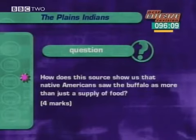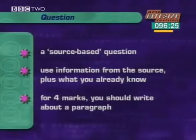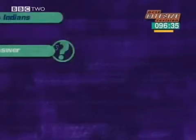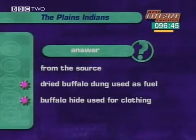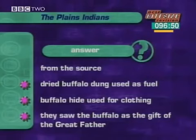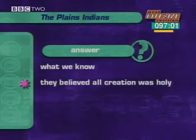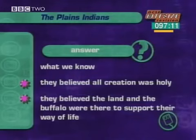This question would carry around four marks. It is a typical source-based question — you need to read the source, but also think about what you already know about Native Americans. The low number of marks tells you that you will not be expected to write more than a short paragraph. The source mentions fuel (dried buffalo dung) and clothing (buffalo hide for coats and moccasins). The source says they regarded the buffalo as provided by the great father of life — fitting with the belief that all creation was holy and the great father provided them with land and buffalo to support their whole way of life. If you have access to the internet, you'll find further source material on the Bitesize History site.